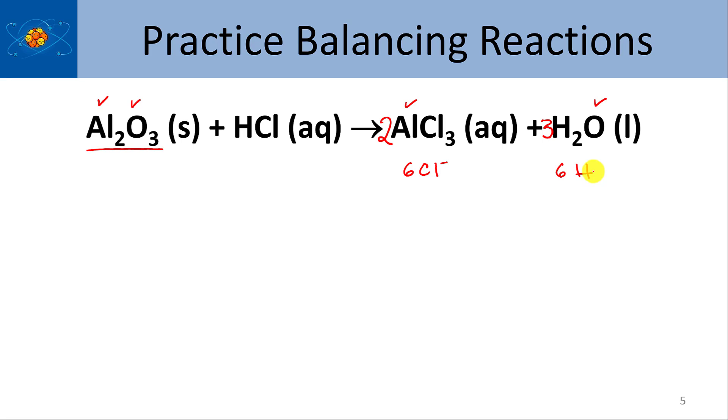And then on the left, the only thing that's left to balance is the HCl. And you see how, again, the numbers match perfectly and so I need six HCls and that'll give me the six hydrogens and the six chloride ions that I actually need.